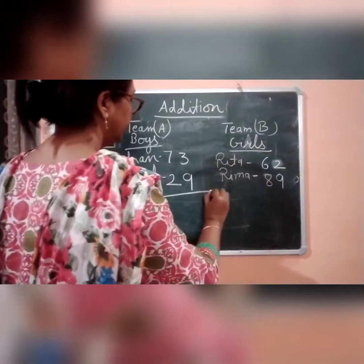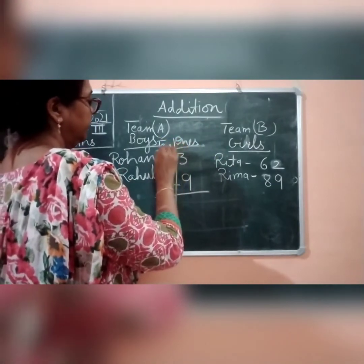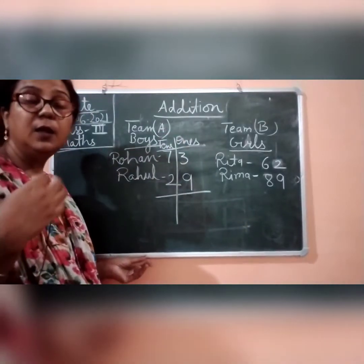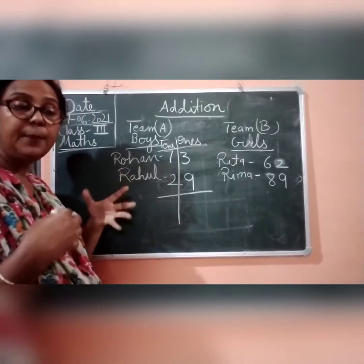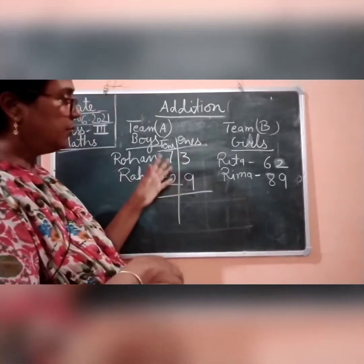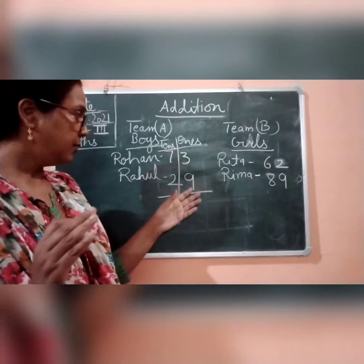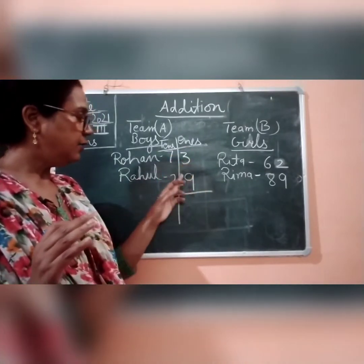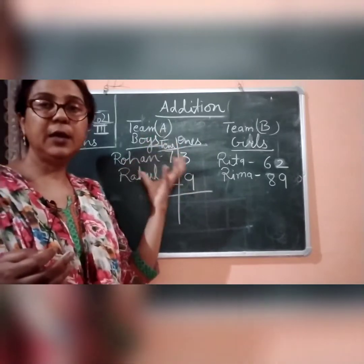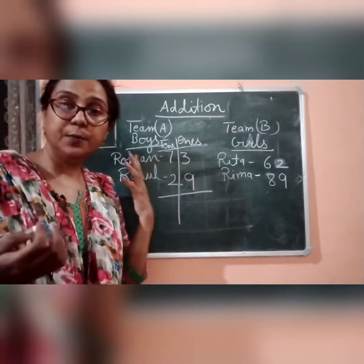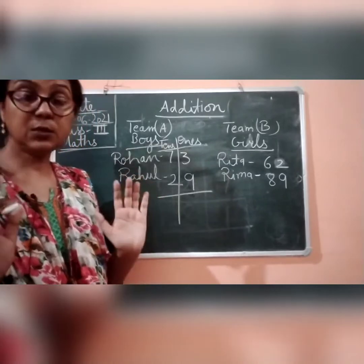First of all we should know where the ones and tens places are, as we have discussed. In regrouping, we separate ones and tens. When we add the ones digits — 3 and 9 — we get 12. Since 12 is more than 9, we write the 2 in the ones place and carry the 1 over to the tens column.